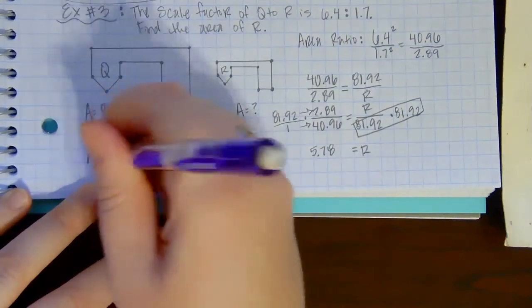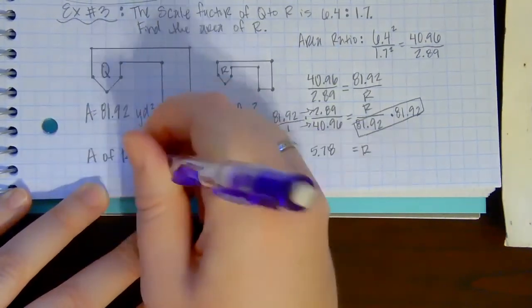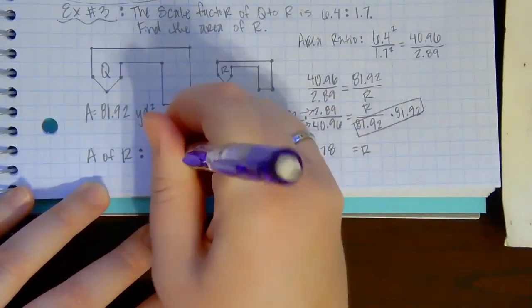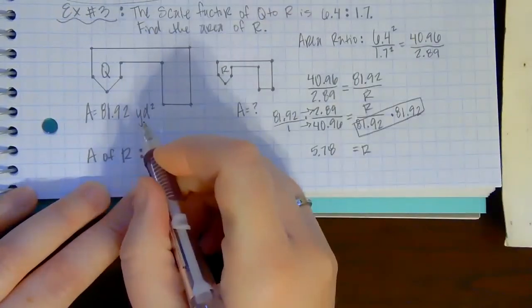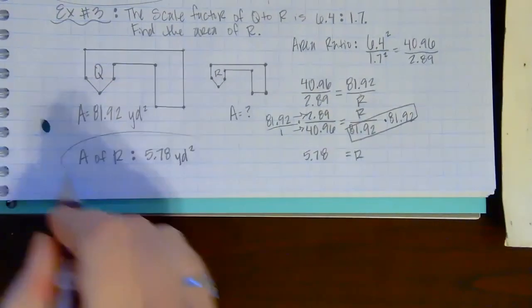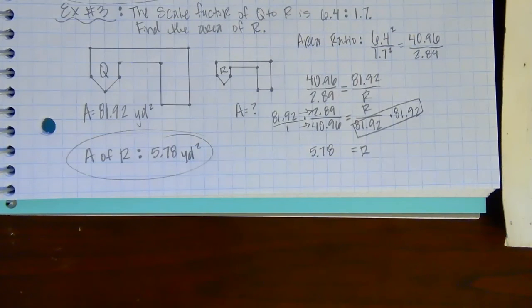So I would say the area of R is 5.78. And notice we're talking about yards here, and since it's area, it's got to be squared.